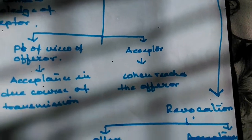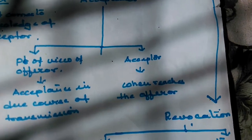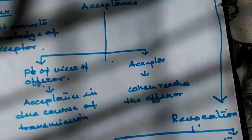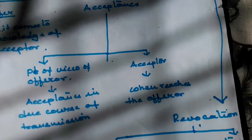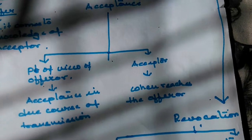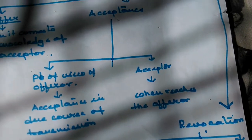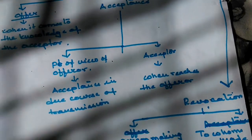Communication of acceptance is complete against the acceptor when it reaches the offeror, and not before that. For example, if A is communicating acceptance to B by letter, then A is at liberty to revoke the acceptance at any point of time before the letter reaches B, and not after that.